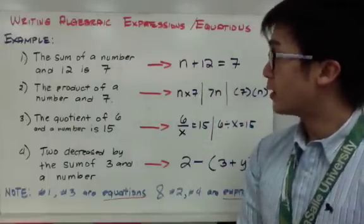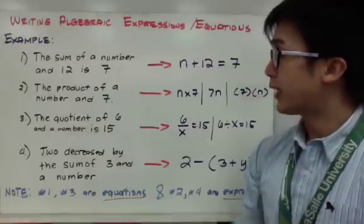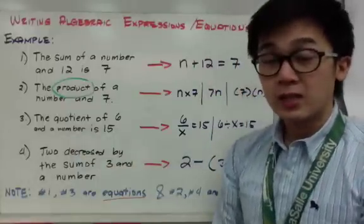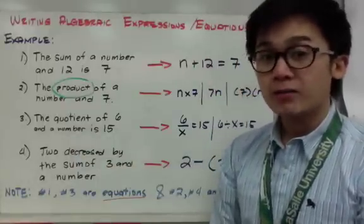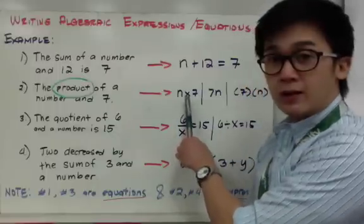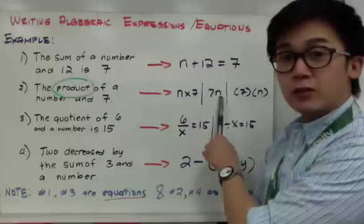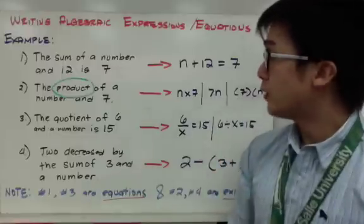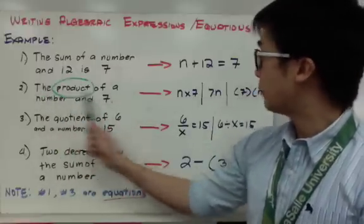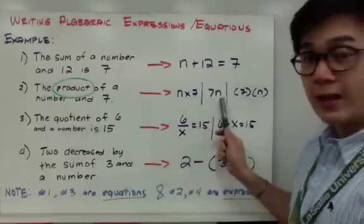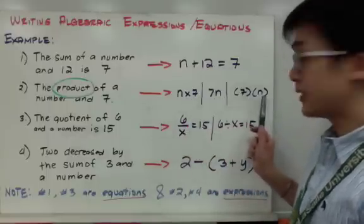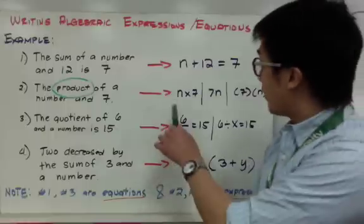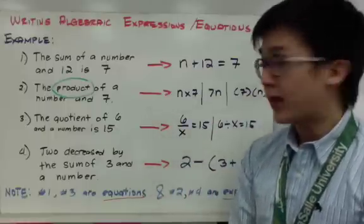For number two: the product of a number and 7. The keyword is product, which is associated with multiplication. There are several ways to represent multiplication in math notation — you can use the times sign, place the numerical value and variable together, or use parentheses. So this expression can be written as n times 7, or 7n, or (7)(n).